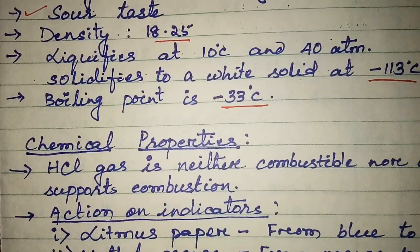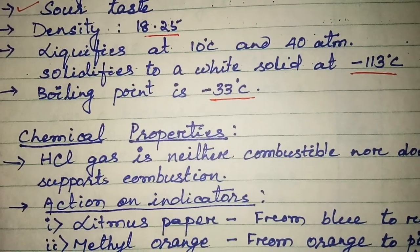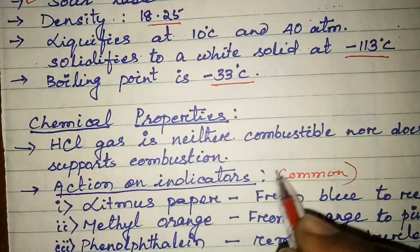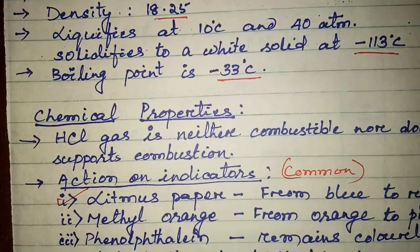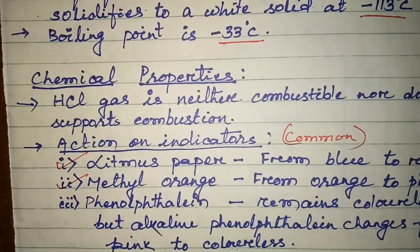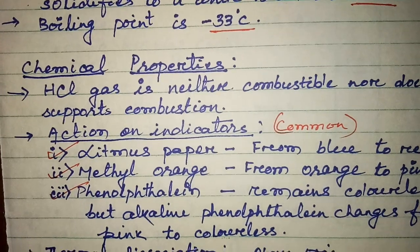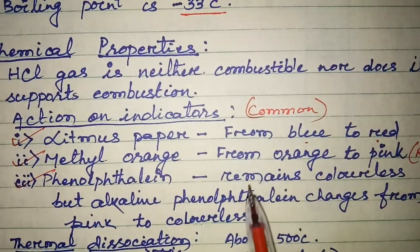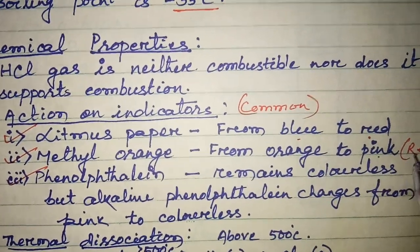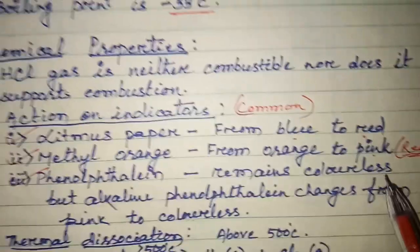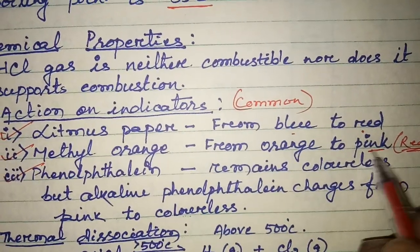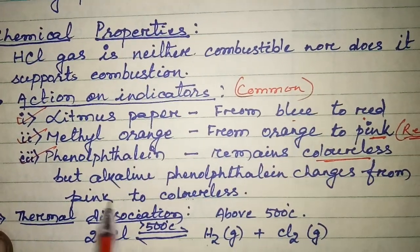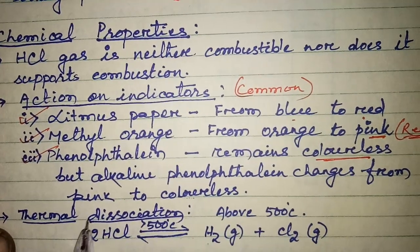Now, what is the action on indicators? There are three common indicators: litmus paper or solution, methyl orange, and phenolphthalein. Blue litmus changes to red litmus when it comes in contact with HCl gas. Methyl orange changes from orange to pink — some book authors refer to it as red. Phenolphthalein remains colorless, but alkaline phenolphthalein changes from pink to colorless.